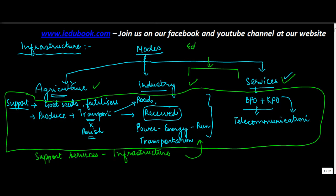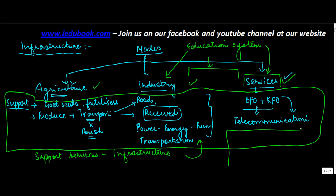Infrastructure also includes the education system. If the system of education in a country is strong and is able to churn out educated people, there will definitely be a large number of people available for the services or for the manufacturing industry. Today, one of the biggest problems we face in India is that the good quality educational institutes have limited intake capacity. While the number of people who graduate or pass out of K-12 is very large, there are not many good institutes that have the capacity to take these people.